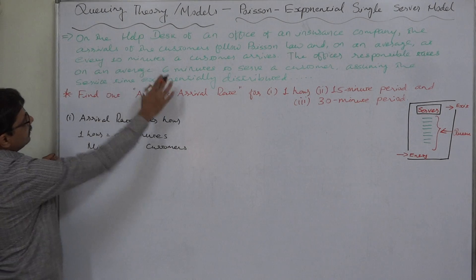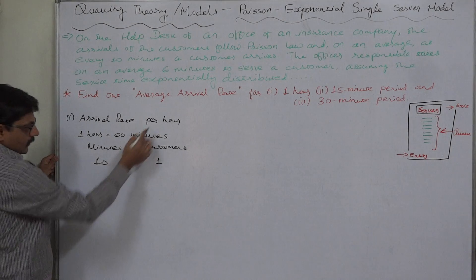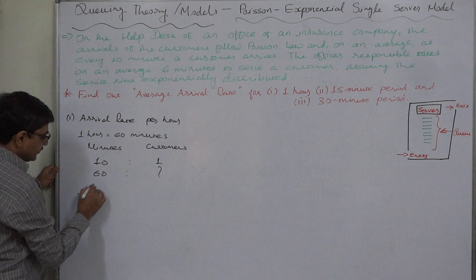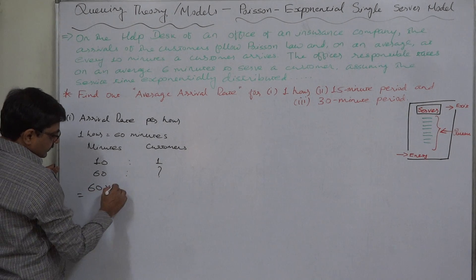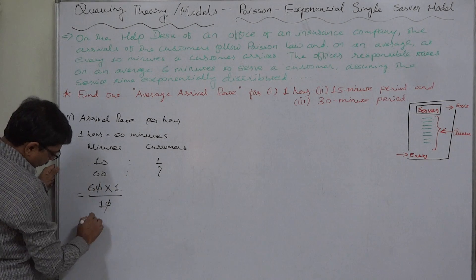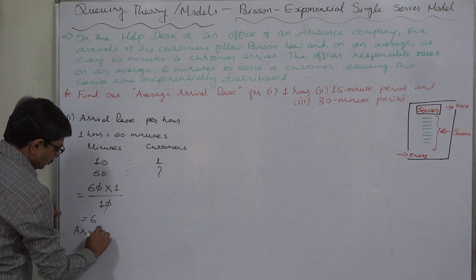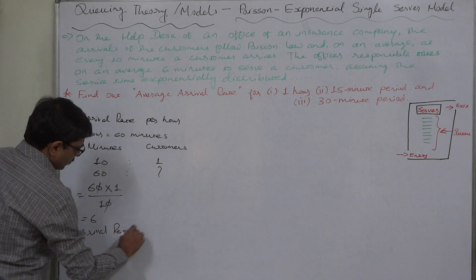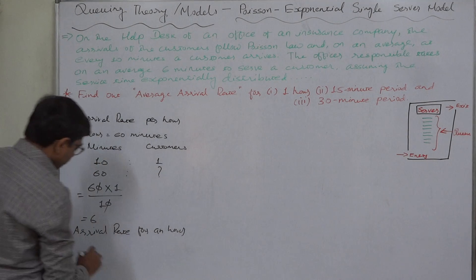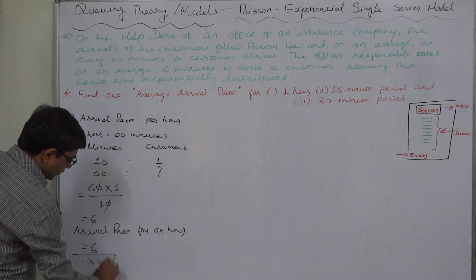So we have a proportion. Minutes 10, number of customers 1. 1 hour, that means 60 minutes, is to how much? So a very simple calculation: 60 minutes multiplied by 1 customer divided by 10 minutes, so it comes to 6. Therefore arrival rate for 1 hour is 6. So in this case the value of lambda stands 6.